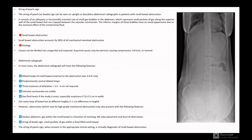On abdominal radiograph, in most cases the abnormal radiograph will have the following features: dilated loops of small bowel proximal to obstruction - we can see the 3-6-9 rule on the X-ray, also predominantly central dilated loops, three instances of distension that can be more than 2.5 to 3 centimeters, and valvulae conniventes are visible. Gas-fluid levels if the study is erect, especially suspicious if more than 2.5 centimeter width in the same loop of bowel but at different heights, more than 2 centimeter difference in height.